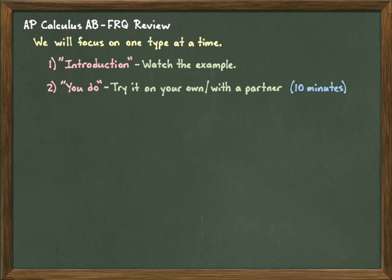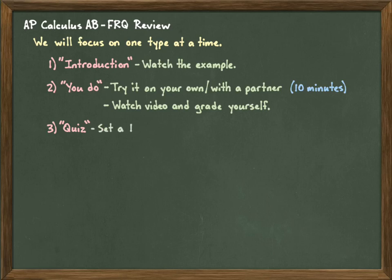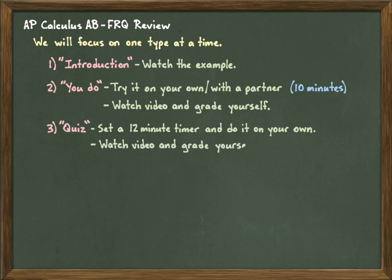You're going to input your score later on. The third FRQ is going to be a quiz. You're going to do this one on your own — set a timer for 12 minutes. If it's a calculator problem, feel free to use your calculator; if not, don't. Do not communicate with anybody during this time. Once you're done, watch the video and grade yourself.